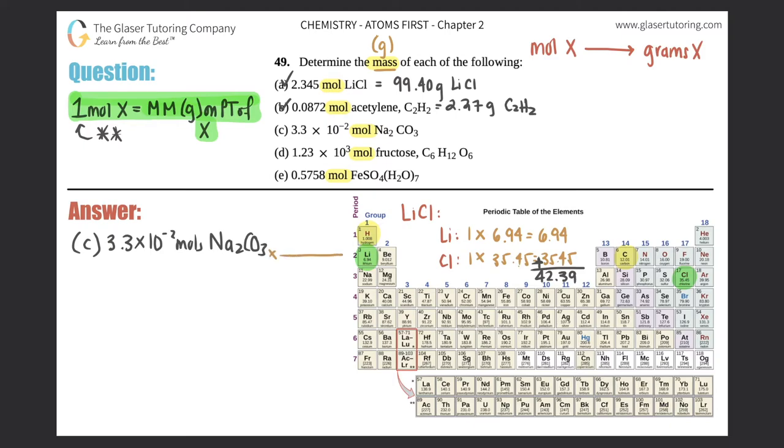C: 3.3 times 10 to the negative two moles of Na2CO3. So converting times by that ratio: moles of Na2CO3 on the bottom, sodium carbonate, grams of Na2CO3 on top. And what is the conversion that we're going to use? This one, right? One mole of anything equals the molar mass in grams. So one mole equals the molar mass in grams. We got to find that on the periodic table.